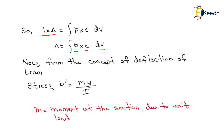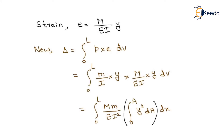From the concept of deflection of beams, stress equals M times Y upon I, where M is the moment at the section due to the unit load, I is the moment of inertia, and Y is the distance of the top fiber from the centroidal axis. Strain equals M divided by EI, multiplied by Y.